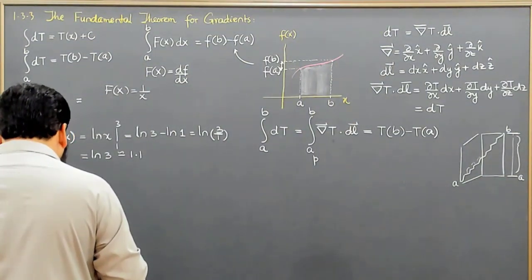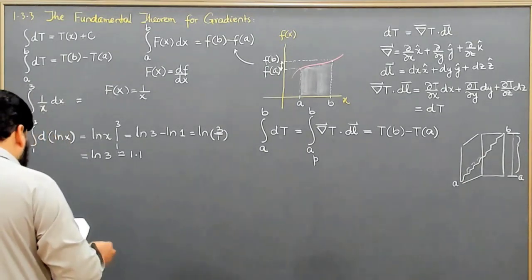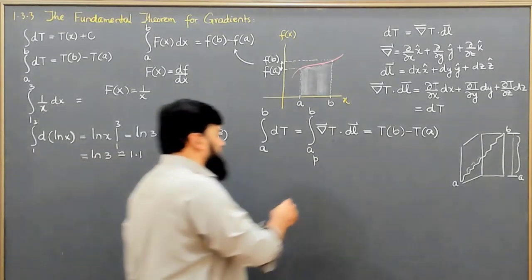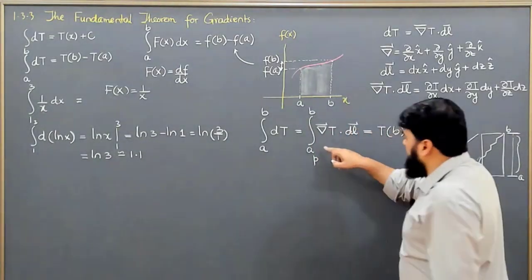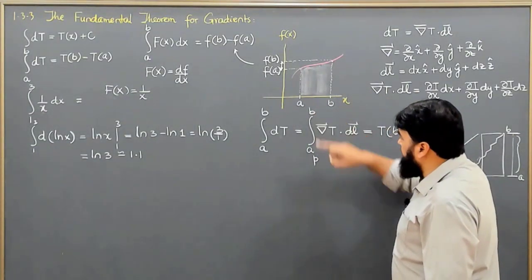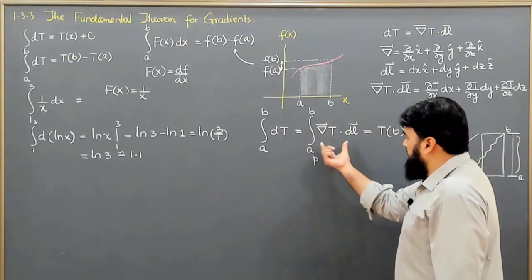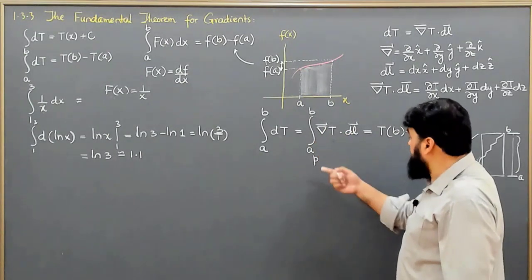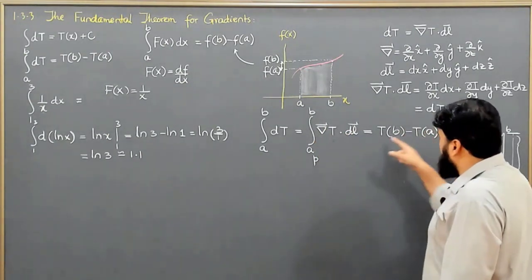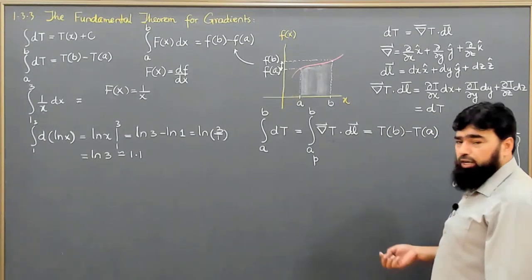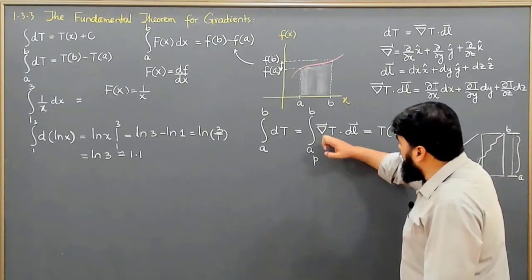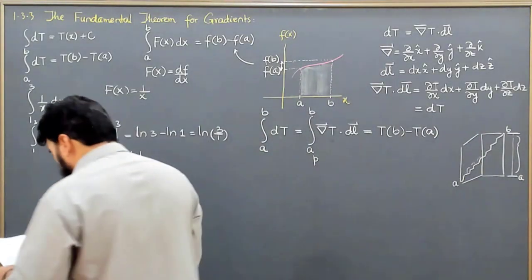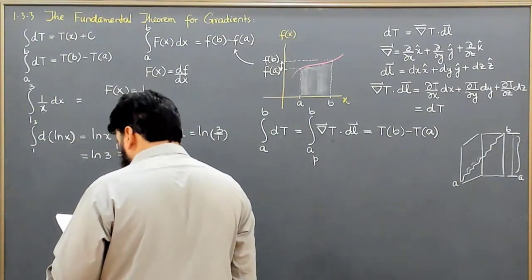There are two corollaries. Corollary 1: the integral from A to B of gradient(T)·DL is a path integral, but its result is completely independent of the path from A to B.